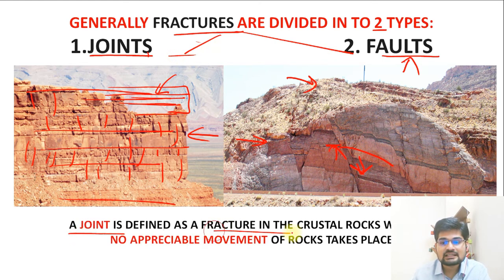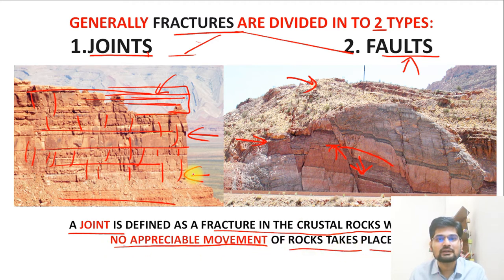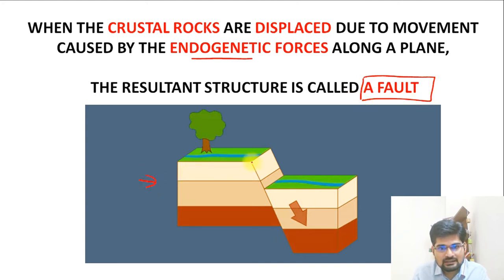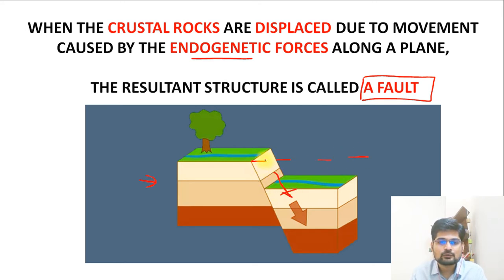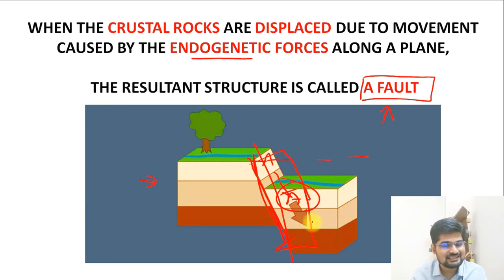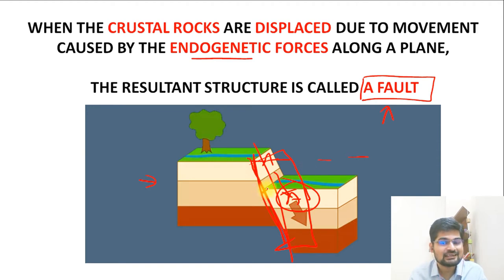A fault occurs when crustal rocks are displaced — the position changes from A to A-dash. This is the resultant of endogenetic forces. The plane along which this displacement occurs is called the fault plane or fault line, similar to terms we saw when studying folds. A fault may be vertical, inclined, or horizontal depending on the direction of the movement responsible for its formation.